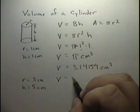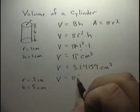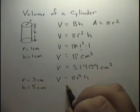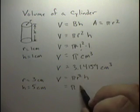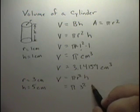We're going to plug back into the equation pi r squared times h. In this case, pi times 3 squared times 5.